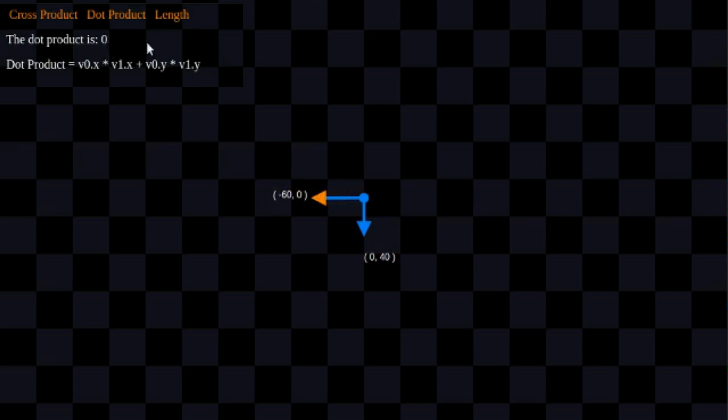Dot product comes in really handy when you're calculating the angle between two vectors. I'm not going to cover that right now — this is just about dot product itself.